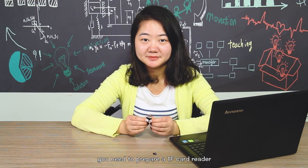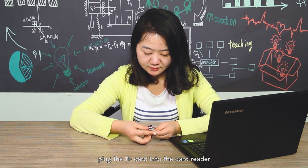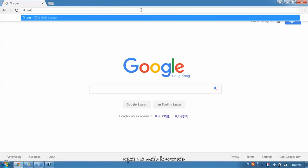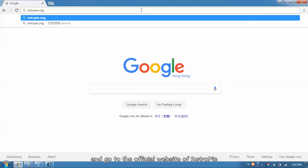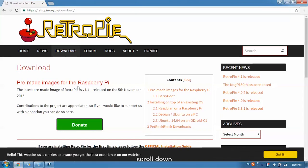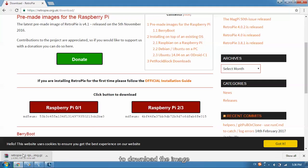You need to prepare a TF card reader. Plug the TF card into the card reader and connect to the computer to download the RetroPie. Open the web browser and go to the official website of RetroPie. Click Download. Scroll down and choose the type of your Raspberry Pi, and then click the corresponding type to download the image.